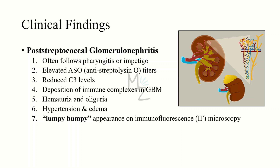Post-streptococcal glomerulonephritis often follows pharyngitis or impetigo. When you see a patient with elevated ASO and reduced C3 levels in their labs, you should conclude this is a strep pyogenes infection. In that condition, there is deposition of immune complexes in the glomerular basement membrane, with symptoms including hematuria, oliguria, hypertension, and edema.